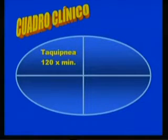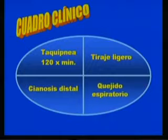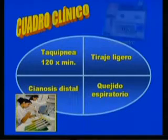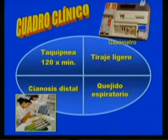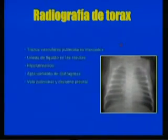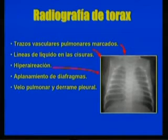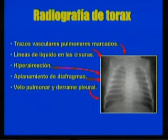From a clinical standpoint, tachypnea can reach up to 120 respirations per minute. There may be slight retractions, distal cyanosis, and even expiratory grunt. There are no gasometric alterations, though if present, they would be very mild. On X-ray, marked pulmonary vascular markings, fluid lines in the fissures, hyperaeration, and diaphragmatic flattening may be found.